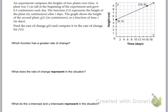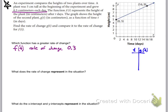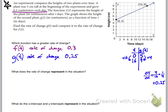Now try the second problem on your own, then I'll walk through it. The problem says the plant grew 0.3 centimeters each day, so f(t) has a rate of change of 0.3. For g(t), using the table with points (0, 5) and (16, 9): delta y is 4, delta x is 16, giving 4/16 = 0.25. So g(t) has a rate of change of 0.25. The word 'each' denotes a rate of change. Since 0.3 > 0.25, f(t) has the greater rate of change.